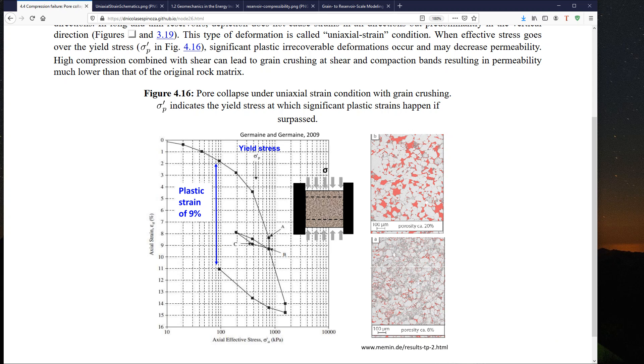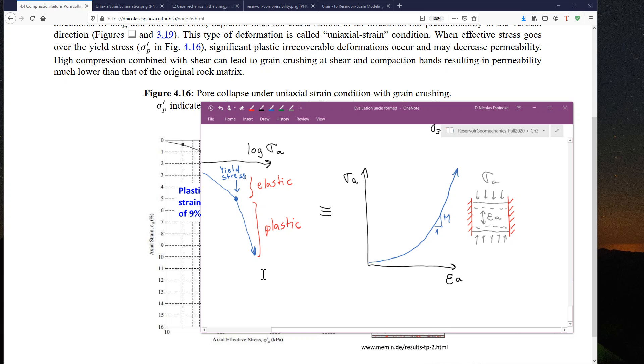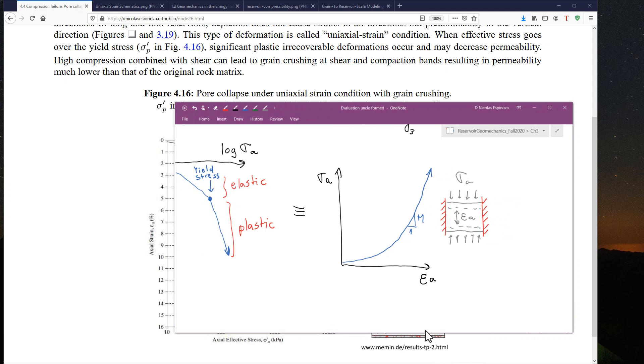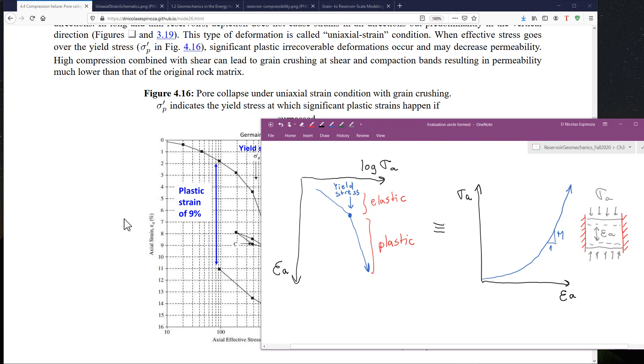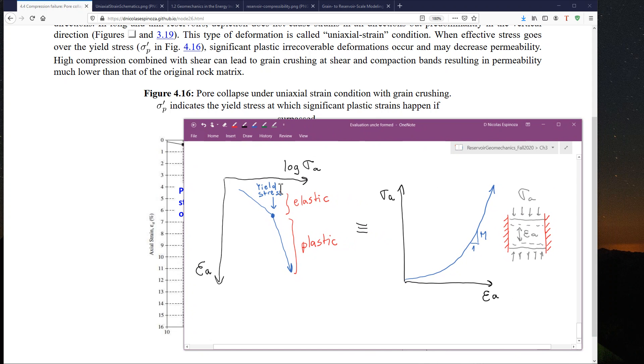Let me present an alternative version to this plot which is exactly the same but a little bit more simplified. This is the same case in the plot that we have in the web page. What we see is in the x-axis the logarithm of axial stress and in the y-axis the axial strain increasing going down. We can see there is at the beginning an elastic domain after which if we pass a certain stress called the yield stress we go into the plastic domain. This is where, for example, your grain crushing is going to occur.